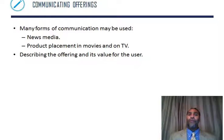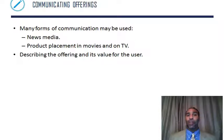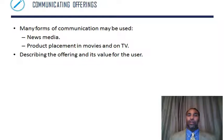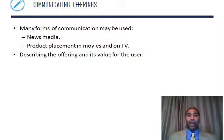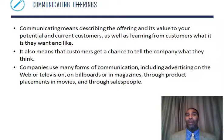Communicating offerings — many forms of communication may be used. You have news media, product placement in movies and on TV. There's a special consumer report about the laptop I'm creating — that's communicating to everybody. For example, I have an electric car, a Leaf, and I noticed in the show Grandfather with John Stamos the son's mother is driving a Leaf, and in another show called Togetherness the guy's driving a Leaf. Companies often just give products so they get out there and people can see them. You also want to describe the offering and its value to the user — not what the value is to somebody else, but what value it is to me specifically. If you make it make sense to me, then I'm going to buy it.